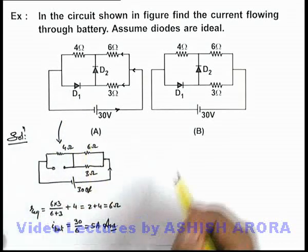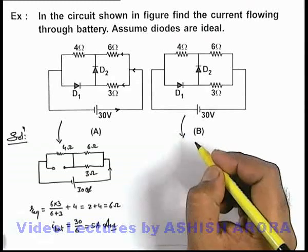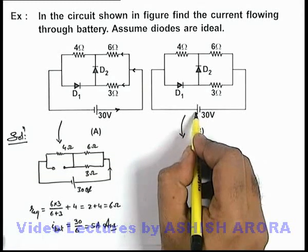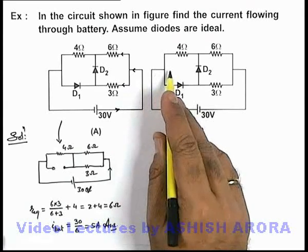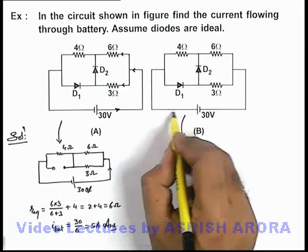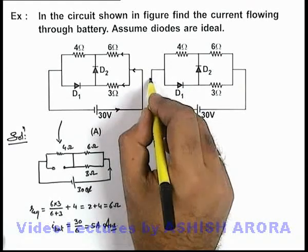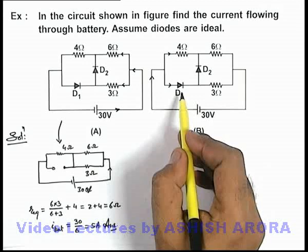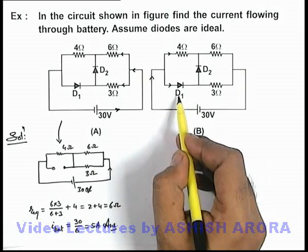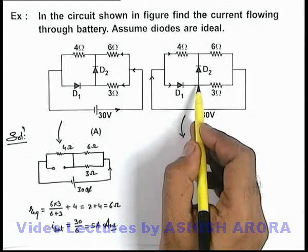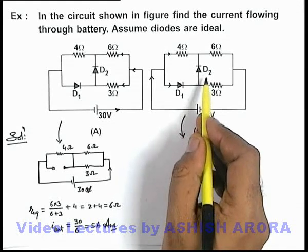Similarly if we analyze the situation in figure B, the battery is reversed, you can see the positive side of battery is connected to the left side of the circuit. So when current will pass through it you can see the current will be going from left to right side. So here you can see that diode D1 will act as forward bias and when current will approach here, in this situation you can see.